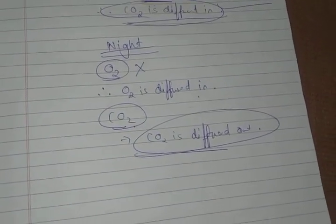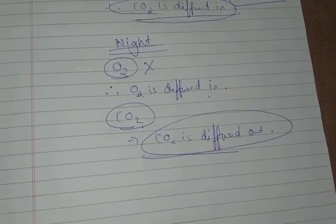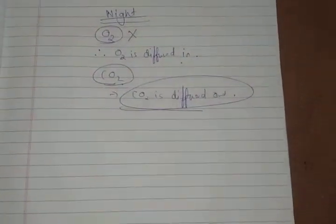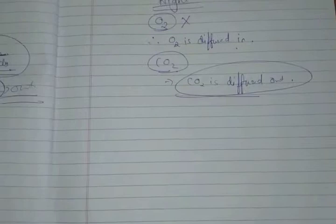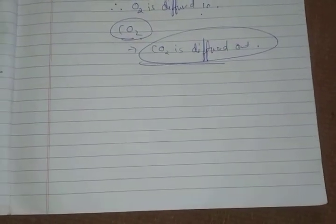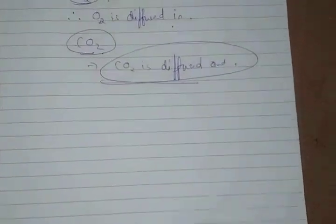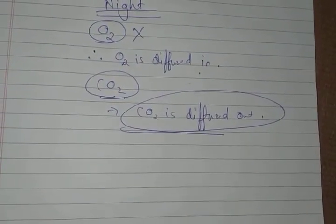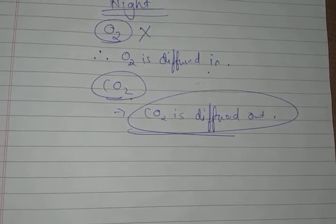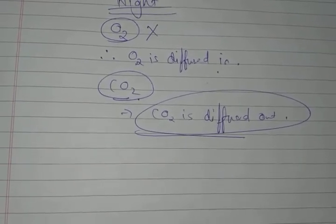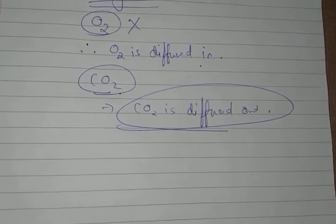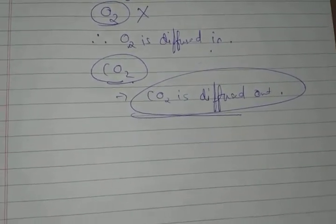Understand the process, don't just memorize what went out or came in during which time. Plants' respiration is quite different from animals' respiration. The respiration in plants and animals is quite different because in plants the respiration rate is very slow.